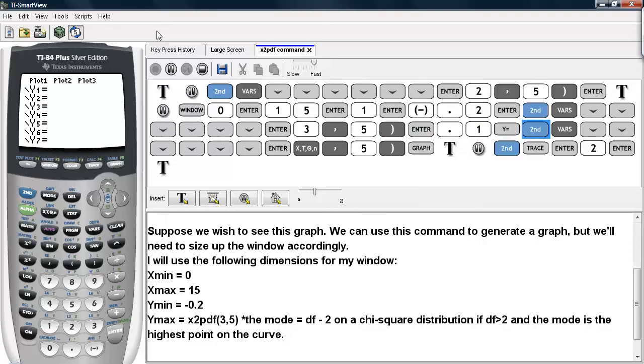Then we can go under here, the y equals menu, and then call up the chi-square PDF command, this time with x as its value. And then the degrees of freedom again are 5, and then we can hit graph.